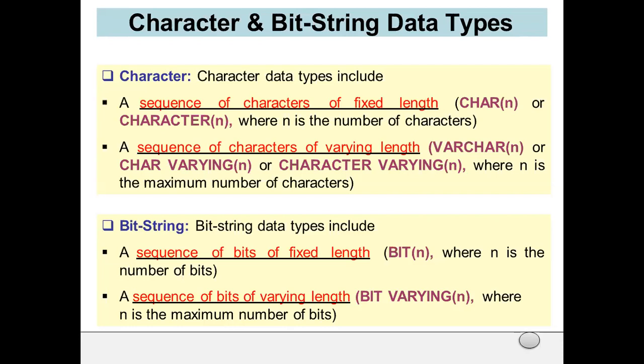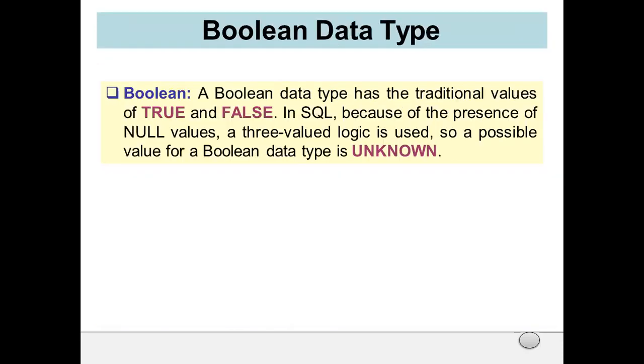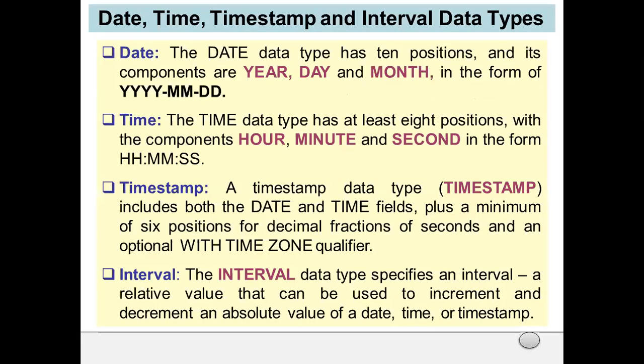Next is the Boolean data type. A Boolean data type has the traditional values of TRUE and FALSE. In SQL, because of the presence of NULL values, a three-valued logic is used, so in addition to TRUE and FALSE, a possible value for a Boolean data type is UNKNOWN.